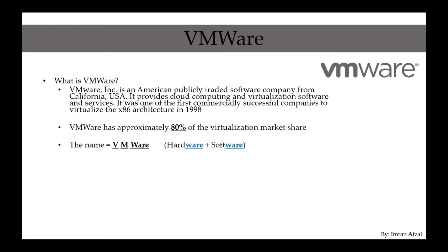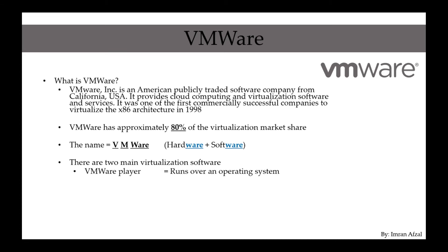They gave it the name 'virtual machine.' VMware has many different products, but there are two main virtualization software we are covering. The first is called VMware Workstation Player, which we will cover later. It's a software that runs over an operating system — you have a physical machine, a laptop or desktop, running Windows, Mac, or Linux, and you install VMware Workstation Player on top of it to create additional virtual machines. It's mostly used in lab or educational environments.